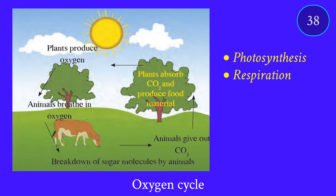Animals breathe and take in oxygen. Plants also breathe but they produce their own oxygen during photosynthesis. When animals breathe out, they give out carbon dioxide. Carbon dioxide is produced by the breakdown of sugar molecules during respiration. Animals take up oxygen and give out carbon dioxide, which is then used by the plants.